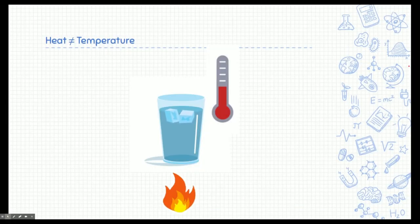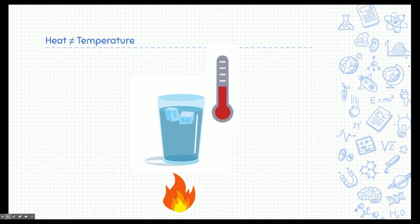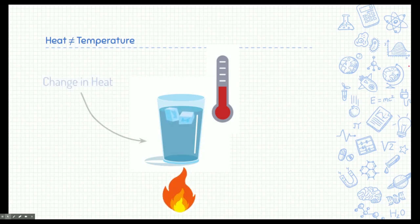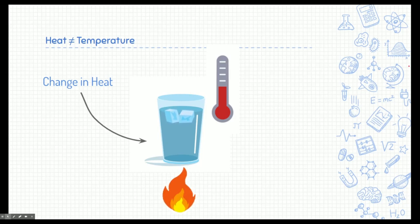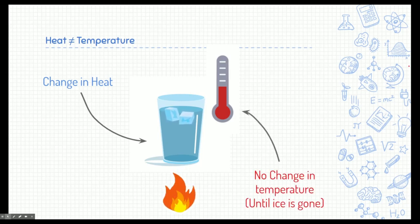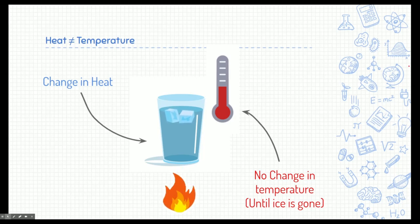Heat is not the same as temperature, and here's an analogy to prove that. Here we have a cup of ice water being heated by flames below — even by the surrounding air. So the ice water has a constant change in heat; the particles are getting faster and faster. But if you put a thermometer in this cup, the temperature would not change — at least until the ice is gone. The ice is cooling the water back down, so the average kinetic energy of the particles isn't changing much.